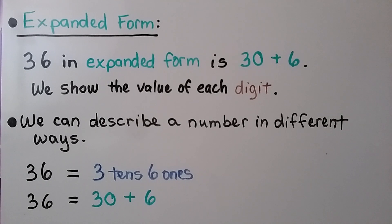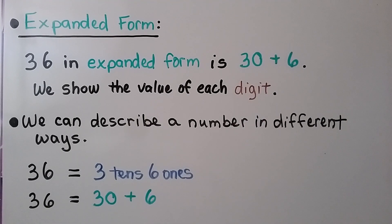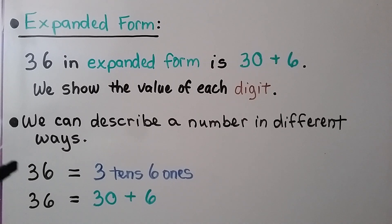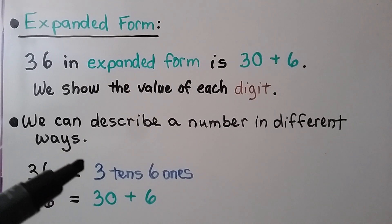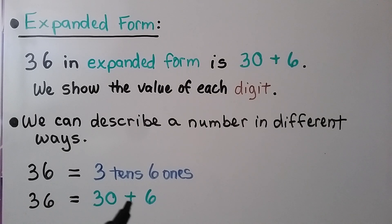The name of this video is Expanded Form Two-Digit Numbers. So what is expanded form? 36 in expanded form is 30 plus 6 — we show the value of each digit. We can describe 36 as three tens and six ones, or as 30 plus 6 in expanded form. Notice that in expanded form we have a plus sign between the values.